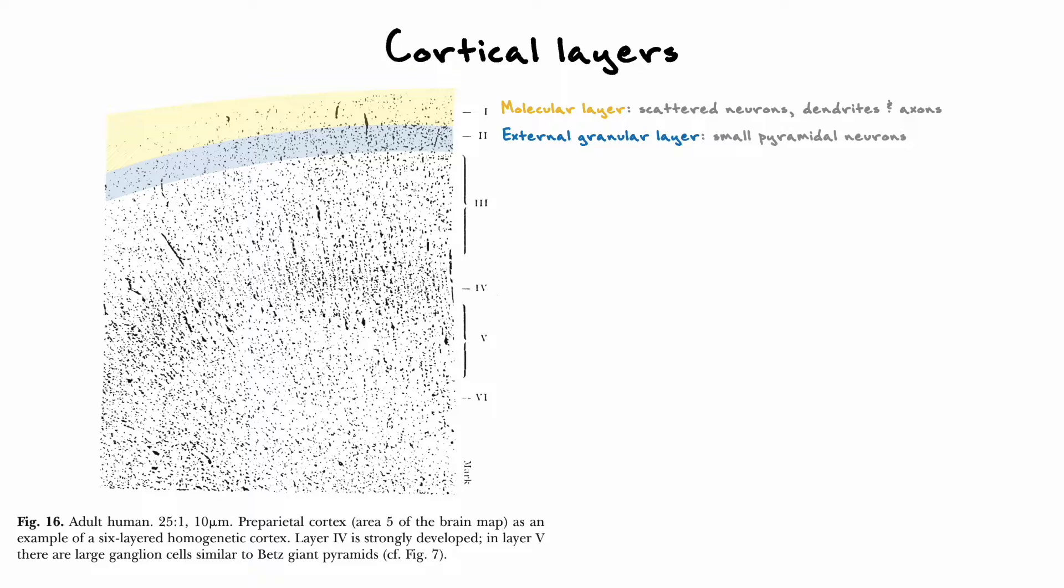The second layer is called the external granular cell layer, and mostly contains dense levels of small spherical neurons. The third layer is called the external pyramidal cell layer, and contains pyramidal neurons that progressively get bigger the deeper the layer goes.